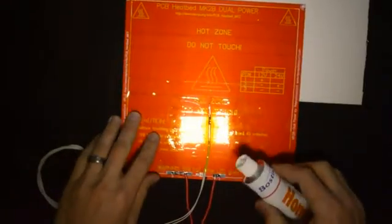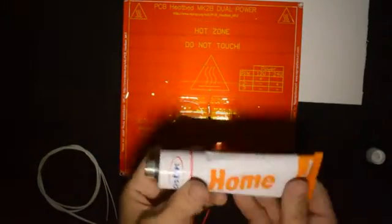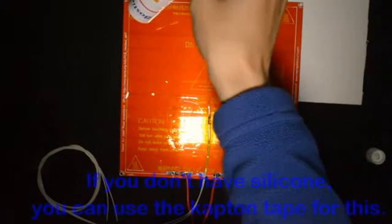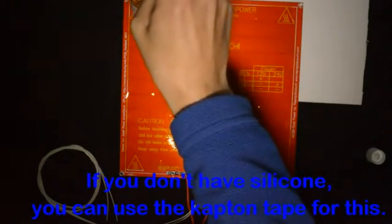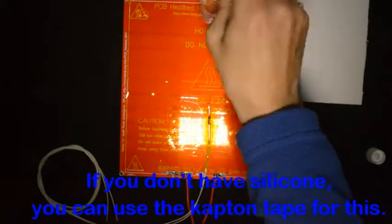The next step is to glue the ceramic fiber paper with silicone to the heated bed. And we'll just add some silicone to the heated bed here and there.